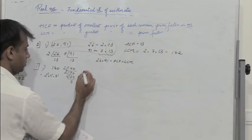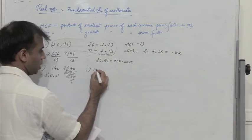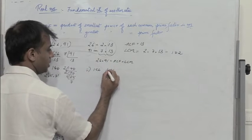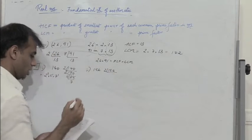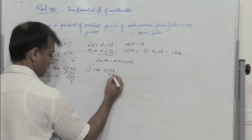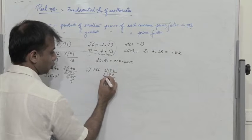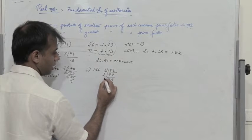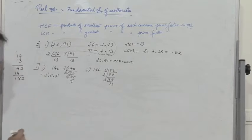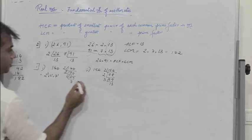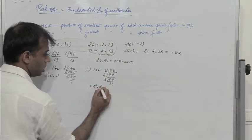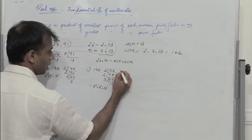The second problem: 156. Dividing 156 by 2 gives 78, by 2 again gives 39, by 3 gives 13. These are all prime numbers. So 156 = 2² × 3¹ × 13¹.